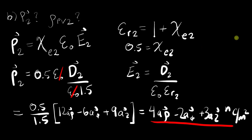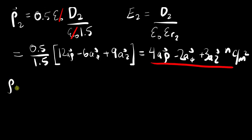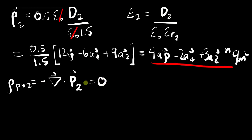Now we need to find the bound volume charge density, which equals the negative divergence of the polarization vector in region 2. With these boundary condition problems, be careful about which region you're referencing. Looking at the components of P2 — 4, negative 2, and plus 3 — when you differentiate each with respect to its variable, they all equal zero. So the divergence, negative or not, is zero.